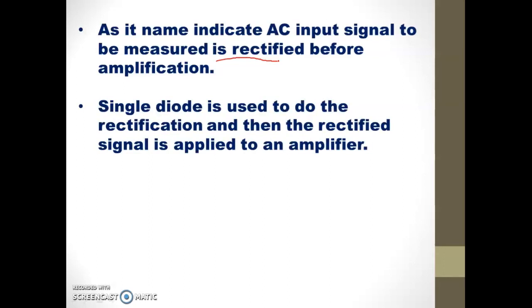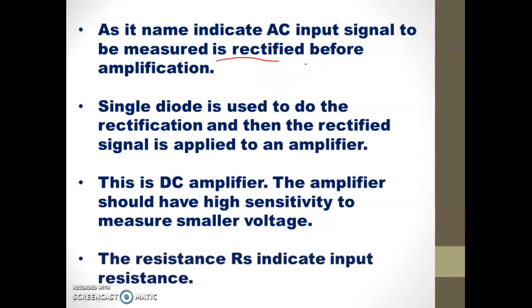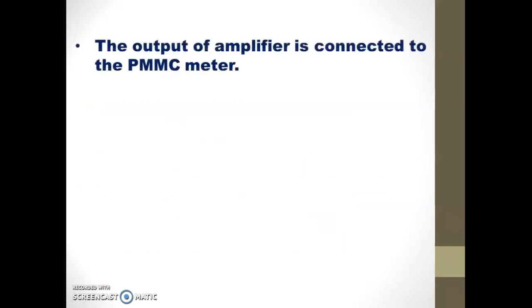The output generated from the rectifier — that is the DC signal — is applied to the DC amplifier. This amplifier is required because the signals obtained from the rectifier are not sufficiently strong to go directly to the PMMC. So before the signal is applied to the PMMC, it needs to be amplified. The amplifier should have very high sensitivity to measure smaller voltages. The resistance RS, connected at the input side, indicates the input resistance. The output of the amplifier is connected to the meter.